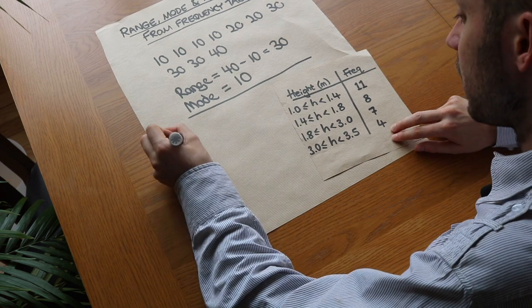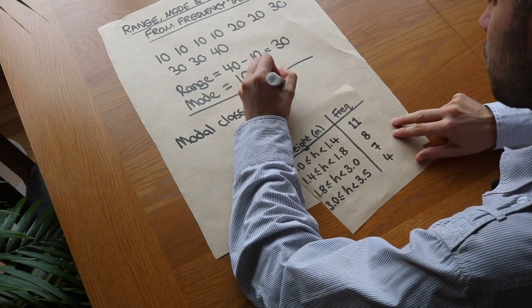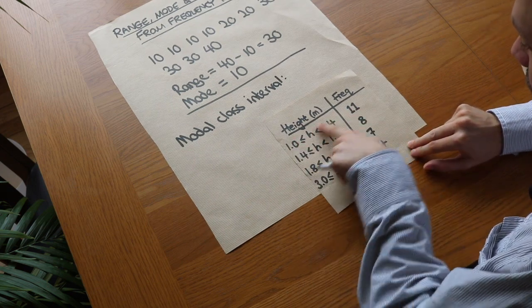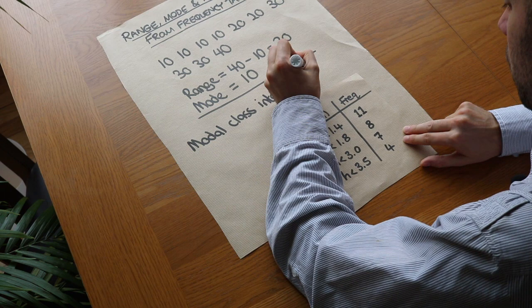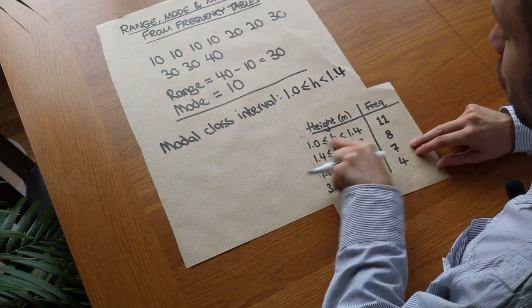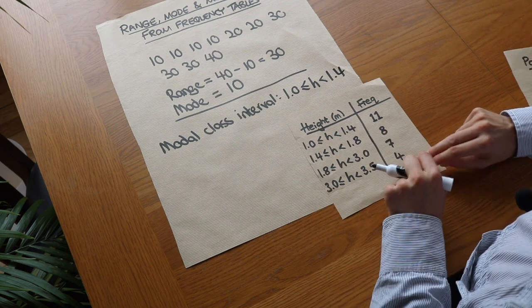So the modal class interval, in this case, would be we just write out the interval with the highest frequency, which we can see is this first interval here. So it's going to be 1.0 less than or equal to h is less than 1.4. So we just copy out exactly what's there, which has the highest frequency.